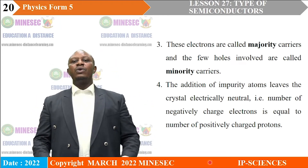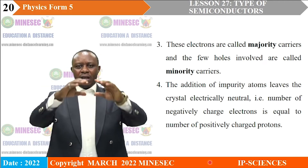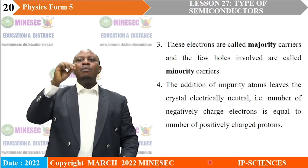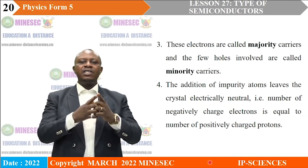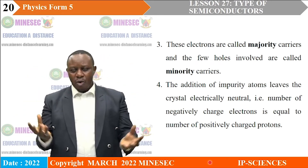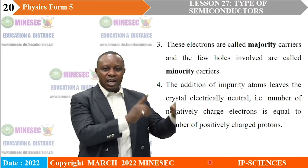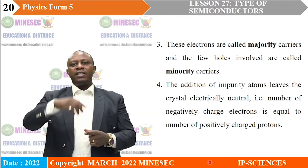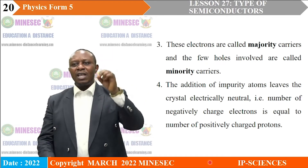Take note that when impurity atoms are added — even though pentavalent impurities provide more electrons to the material — the overall material remains electrically neutral. Even though it has more conduction electrons, the material remains electrically neutral because the number of negatively charged electrons equals the number of positively charged protons in the whole piece of material.